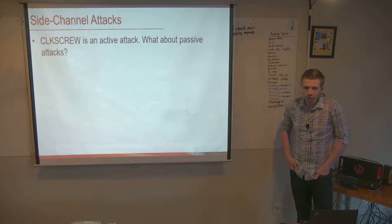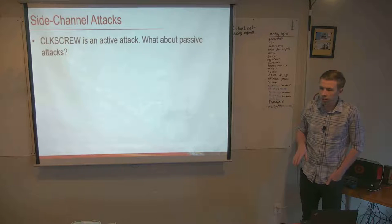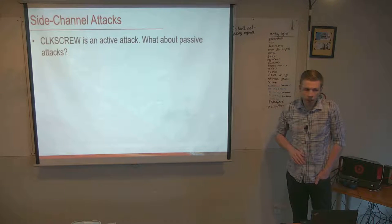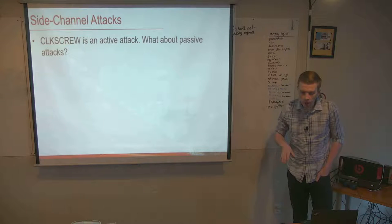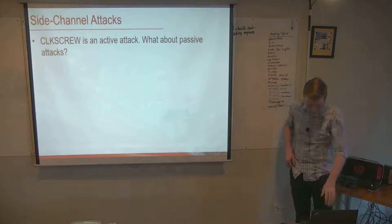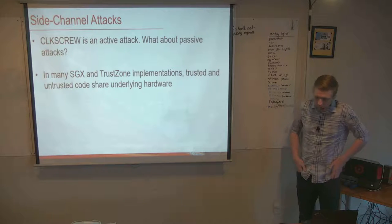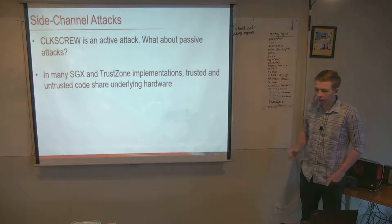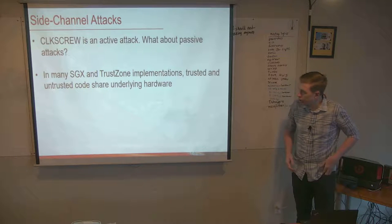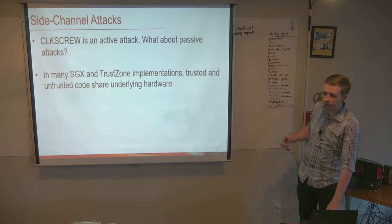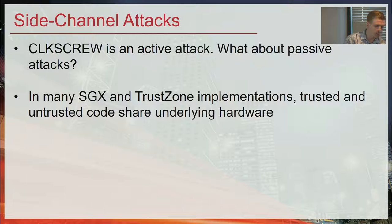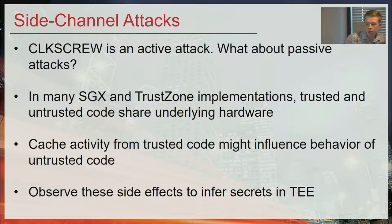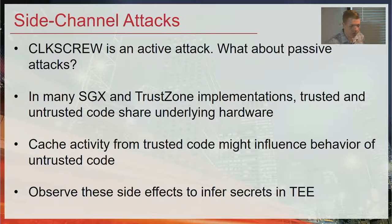Clock Screw is an example of an active attack — we're actually modifying the behavior of the trusted code. What I want to look at is a passive attack, where we don't modify the behavior of the trusted code, we just monitor what it's doing. A good way to do this is through side-channel attacks, which arise when trusted and non-trusted code share the same underlying hardware. If they share the same cache, we can observe how the trusted code's behavior impacts the cache and then monitor that impact to infer secrets happening inside the trusted execution environments.